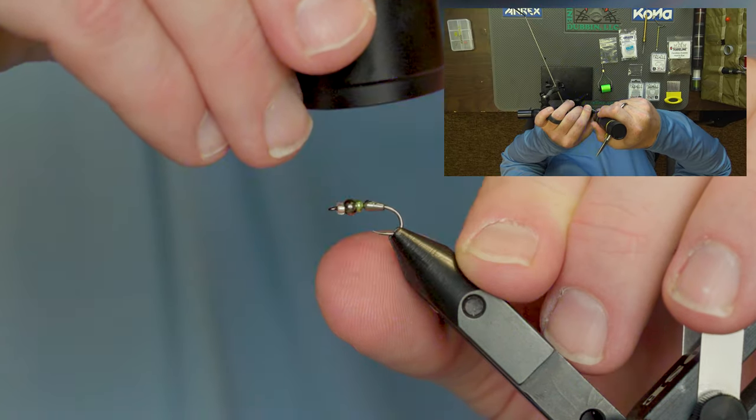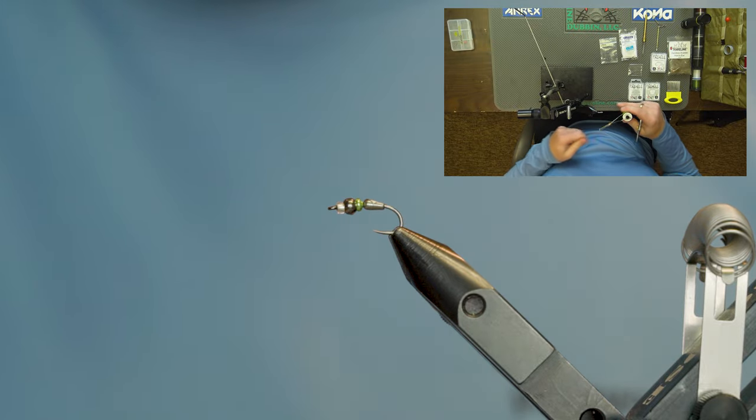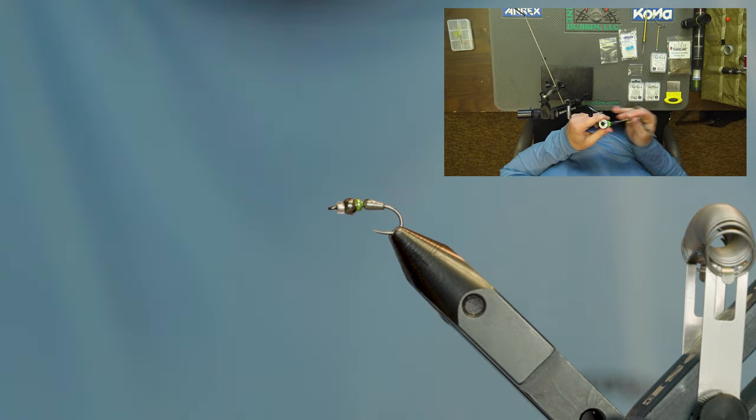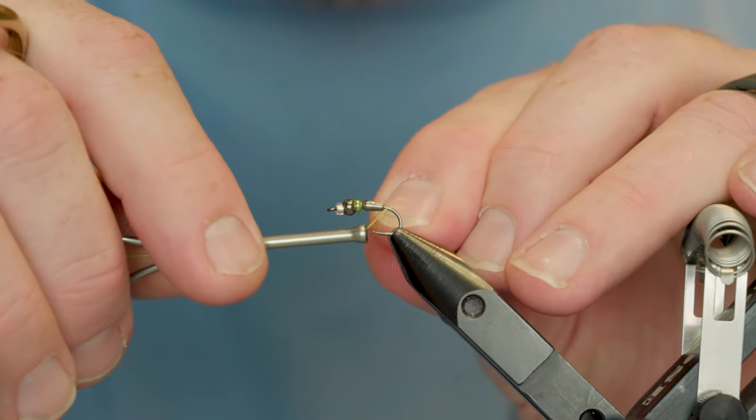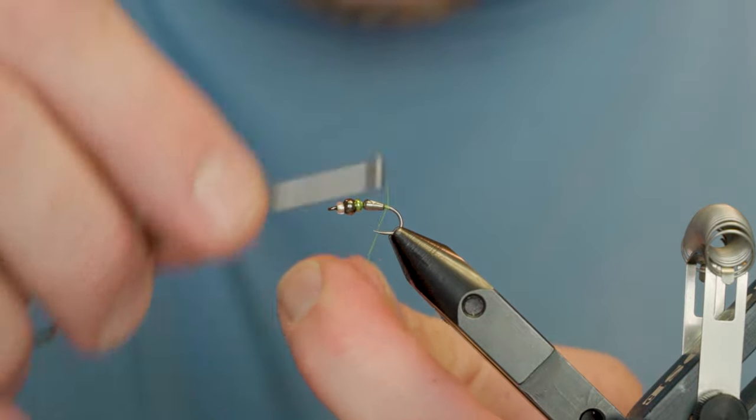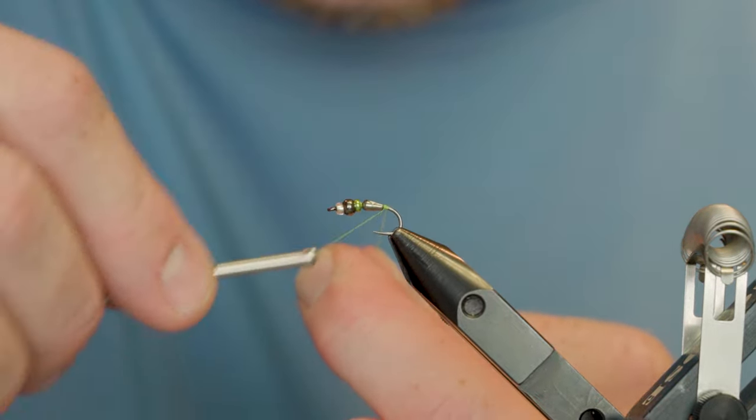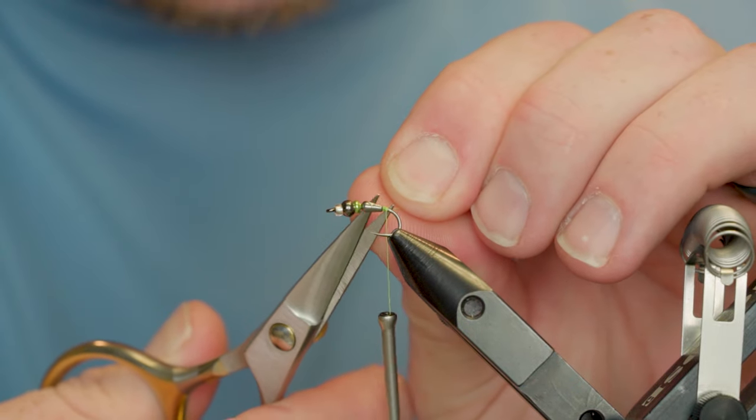Which is pretty simple from here on out. We're just going to start our thread behind that teardrop body. This is some Classic Waxed Thread from Semperfli, it's an A dot gauge and I'm using the fluorescent green color today. This color will finish real nice behind that green bug band that we have on there. And then we can clip out that extra.